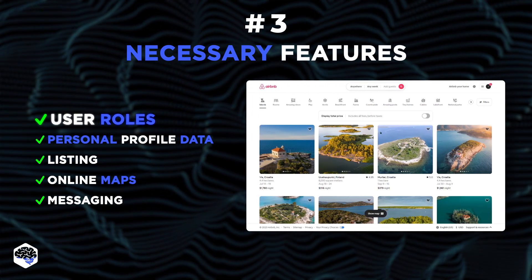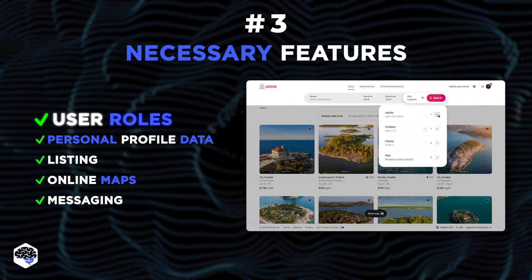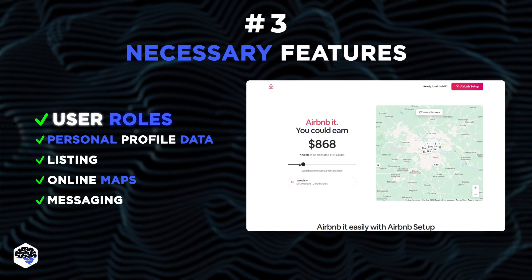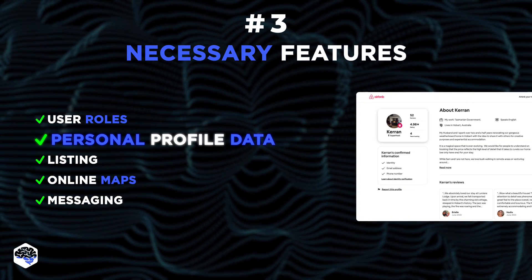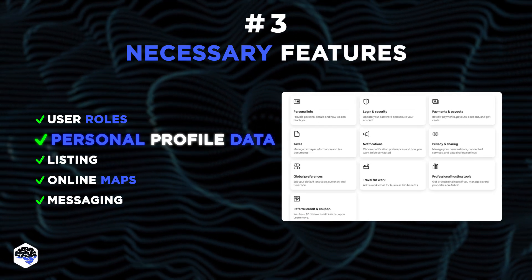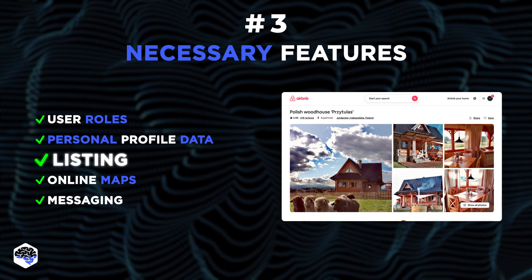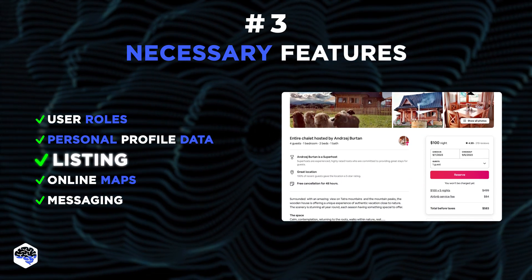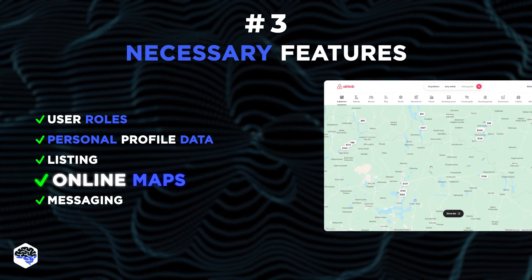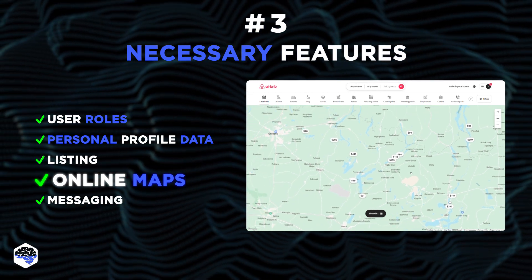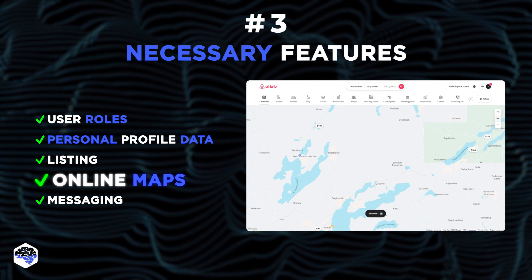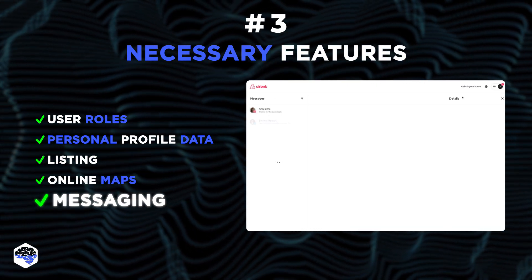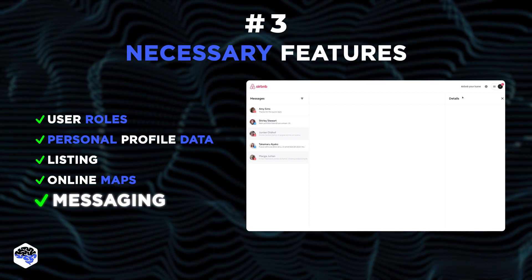Let's break it down. First, user roles: the platform should differentiate between travelers and hosts, with flexible roles allowing users to switch between providing lodging and looking for it. Then, personal profile data — allowing users to manage their account settings smoothly increases user satisfaction and trust. Listing: both hosts and travelers need to provide and access important data, including details about accommodations, location, type, and prices. Online maps enable users to navigate local areas and find suitable lodging, enhancing user experience. And finally, messaging: communication between hosts and travelers about arrival time, number of guests, requests, and any other questions is vital for smooth transactions.